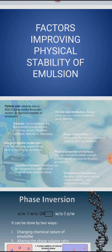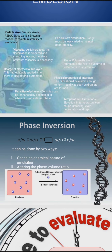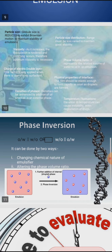The first factor is particle size, or in the case of emulsion, that is globule size. As the globule size is reduced in an emulsion, they will tend to exhibit Brownian movement. For example, in microemulsion, the globule size is 0.01 micrometer. In Stokes' law, the diameter of the globule is considered as the major factor in creaming of emulsion.